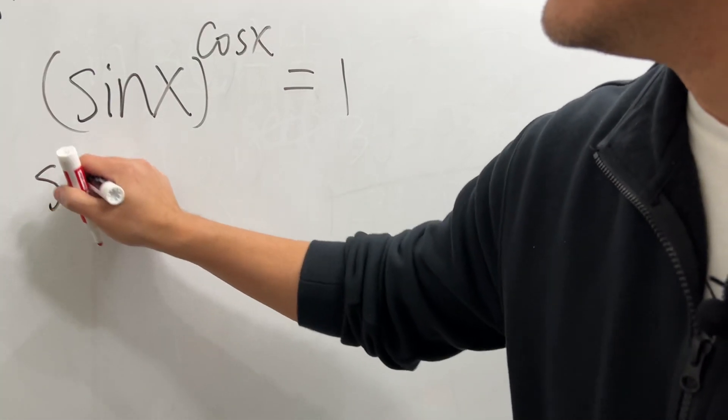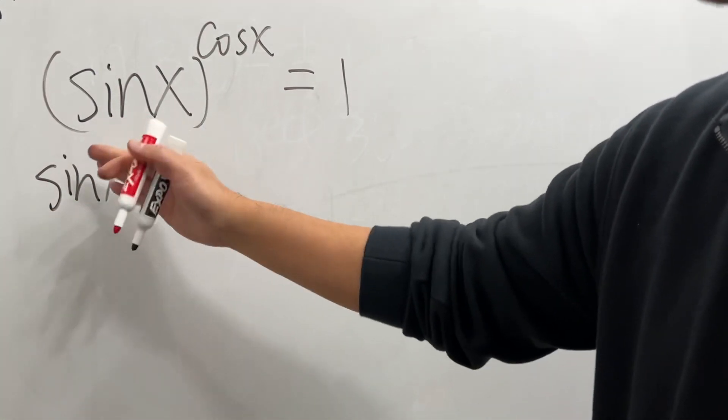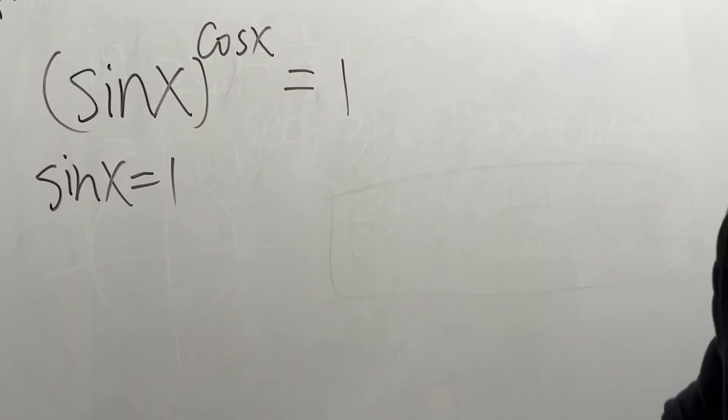Firstly, we can have the base sin x equal to 1, because 1 to any power is equal to 1. So that's that.